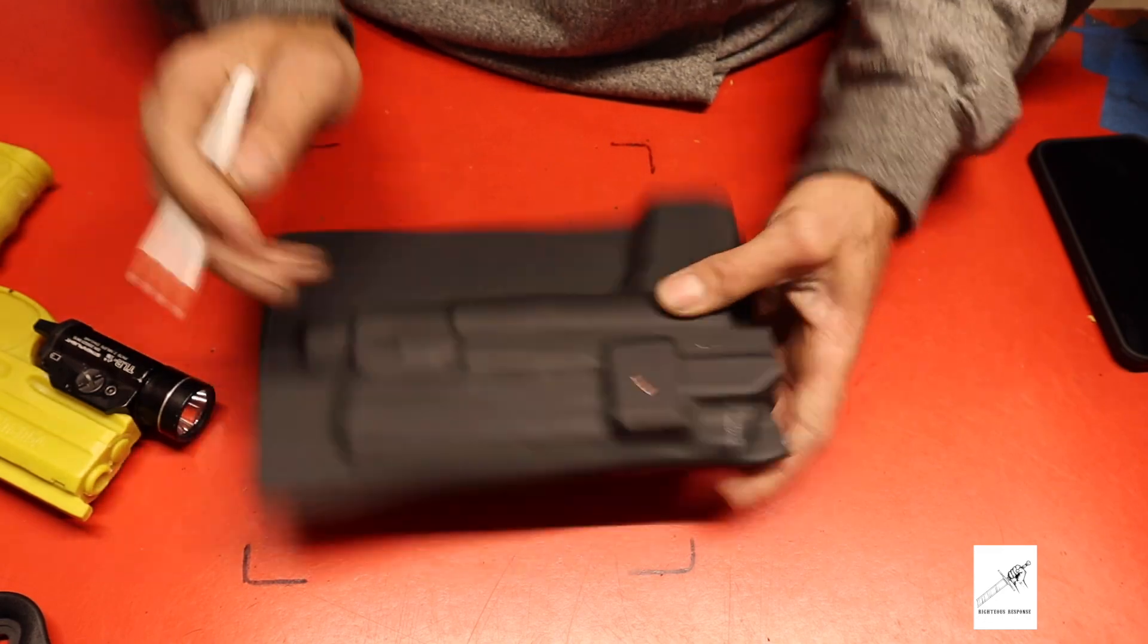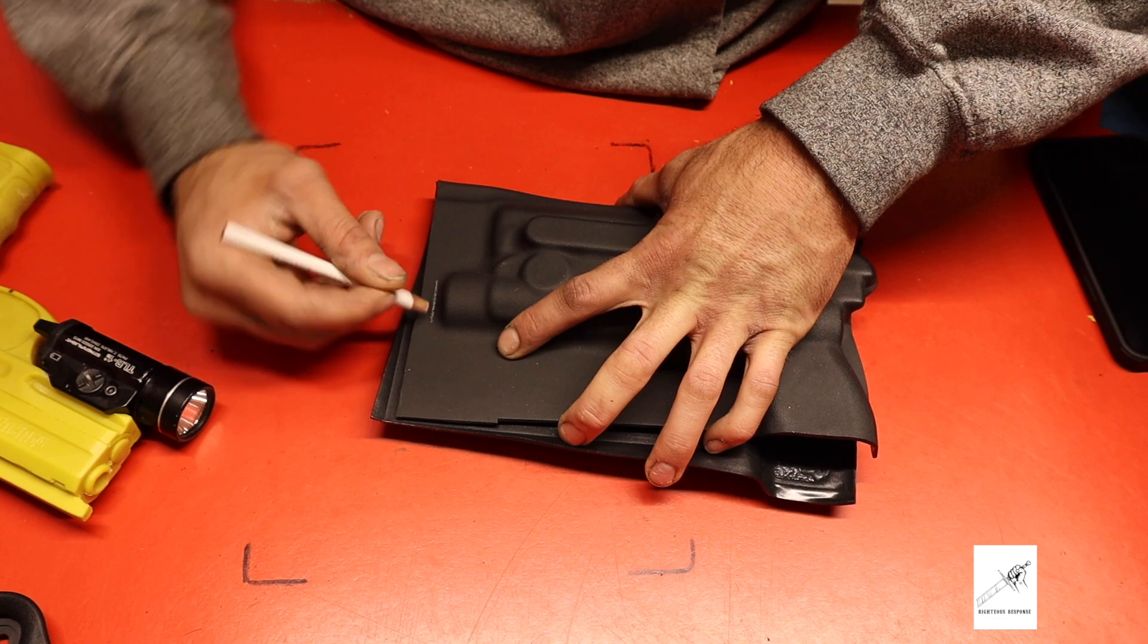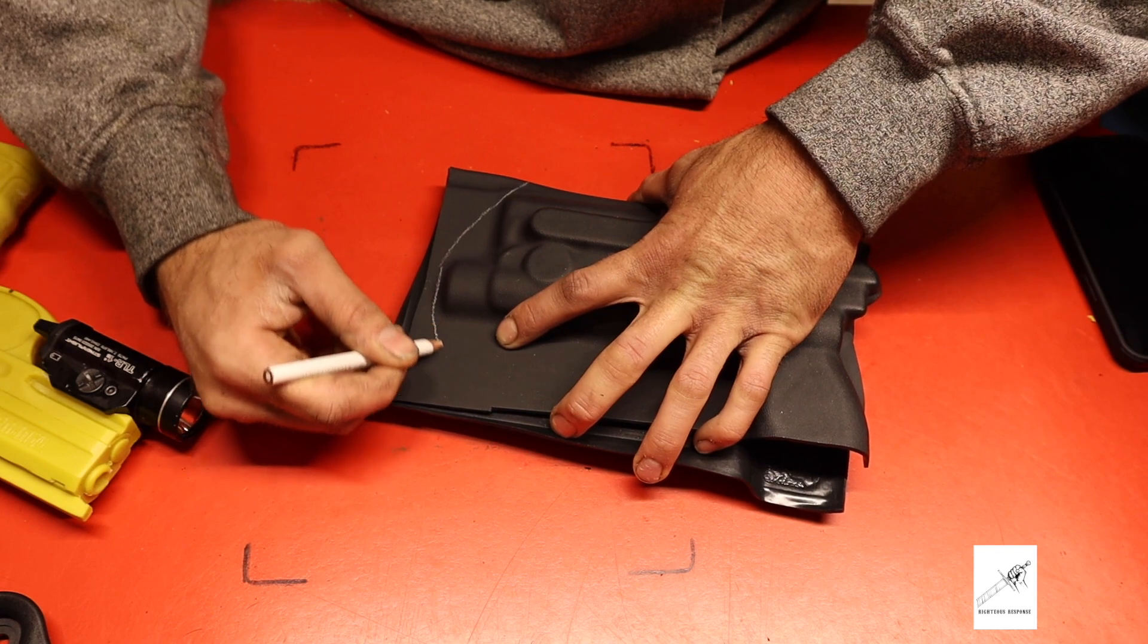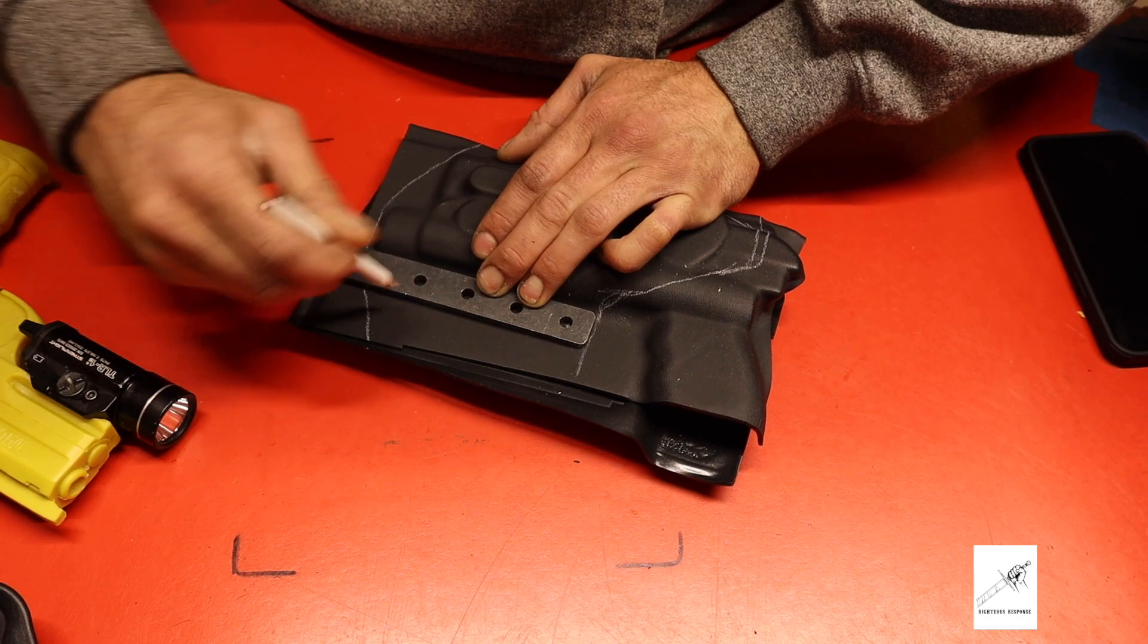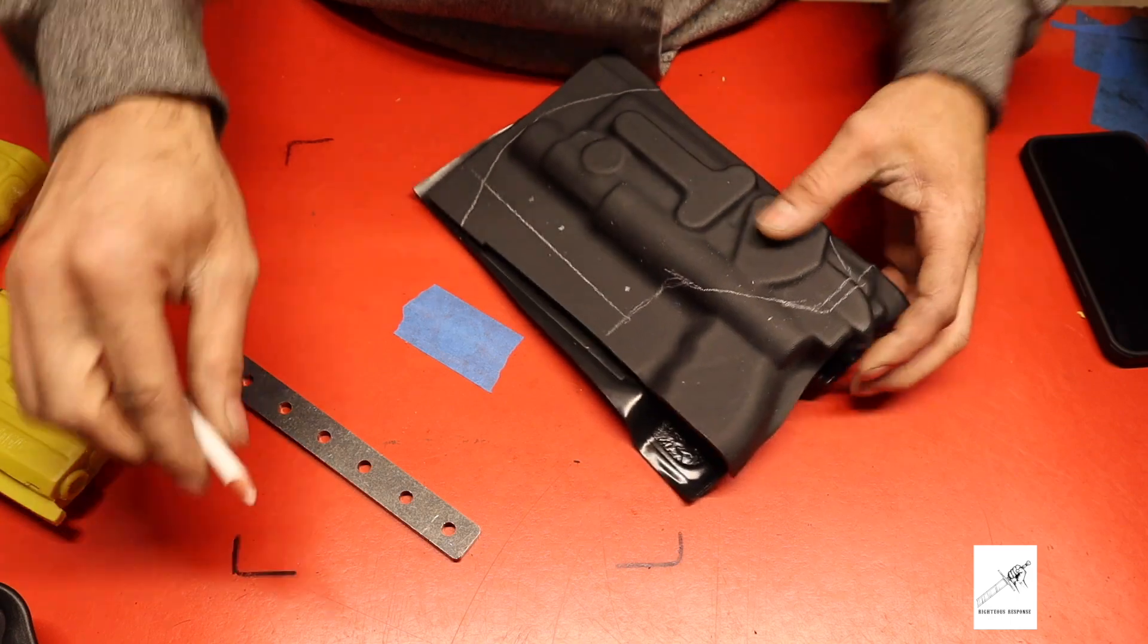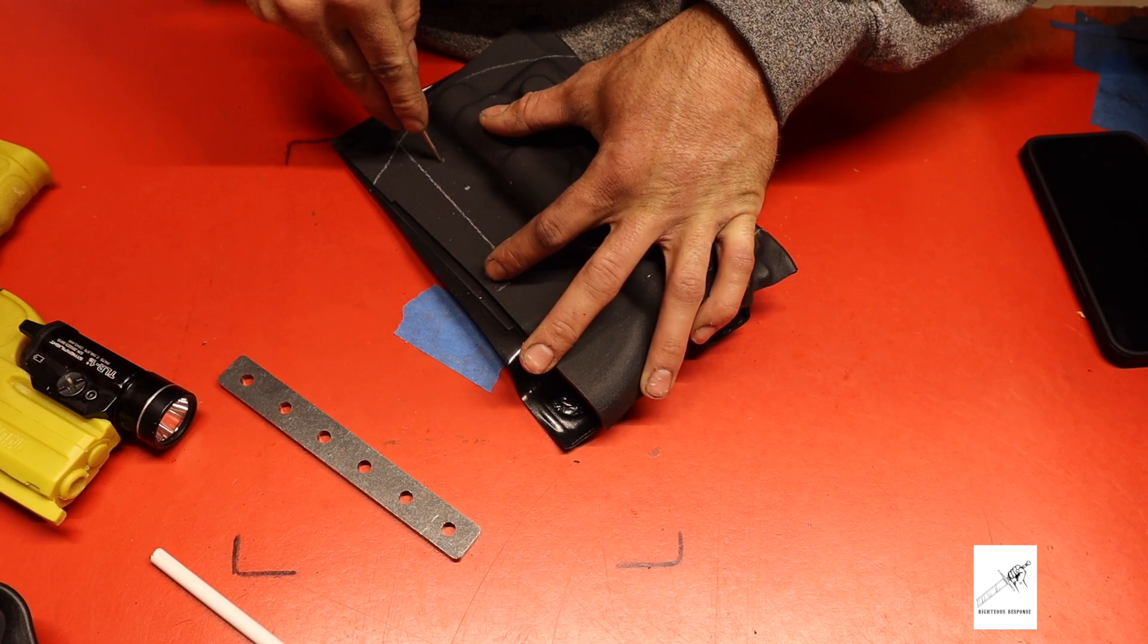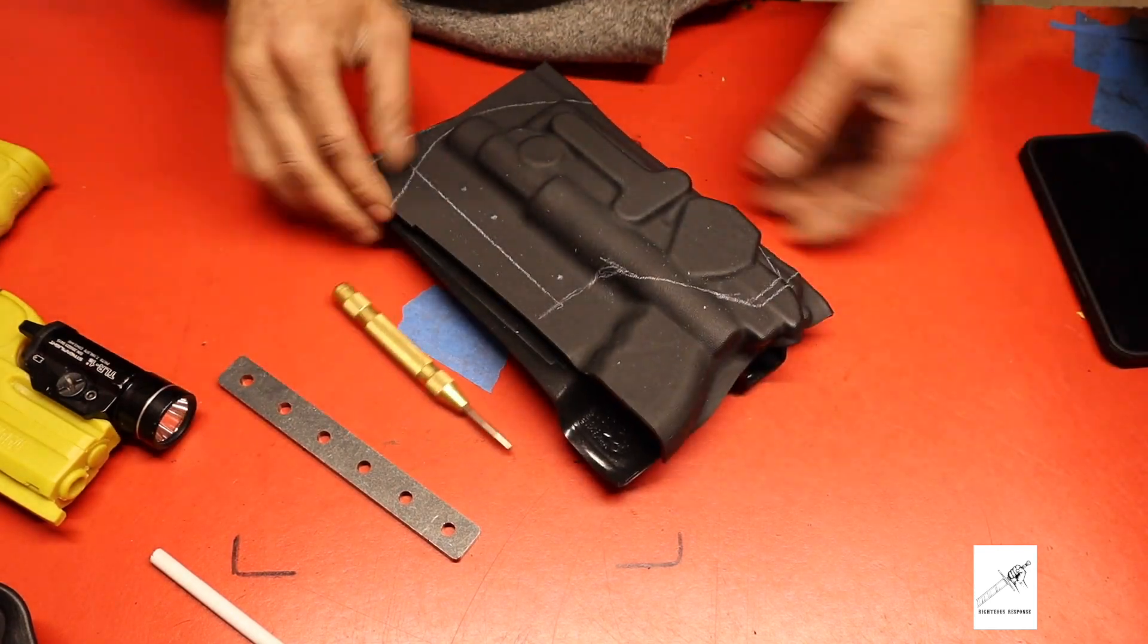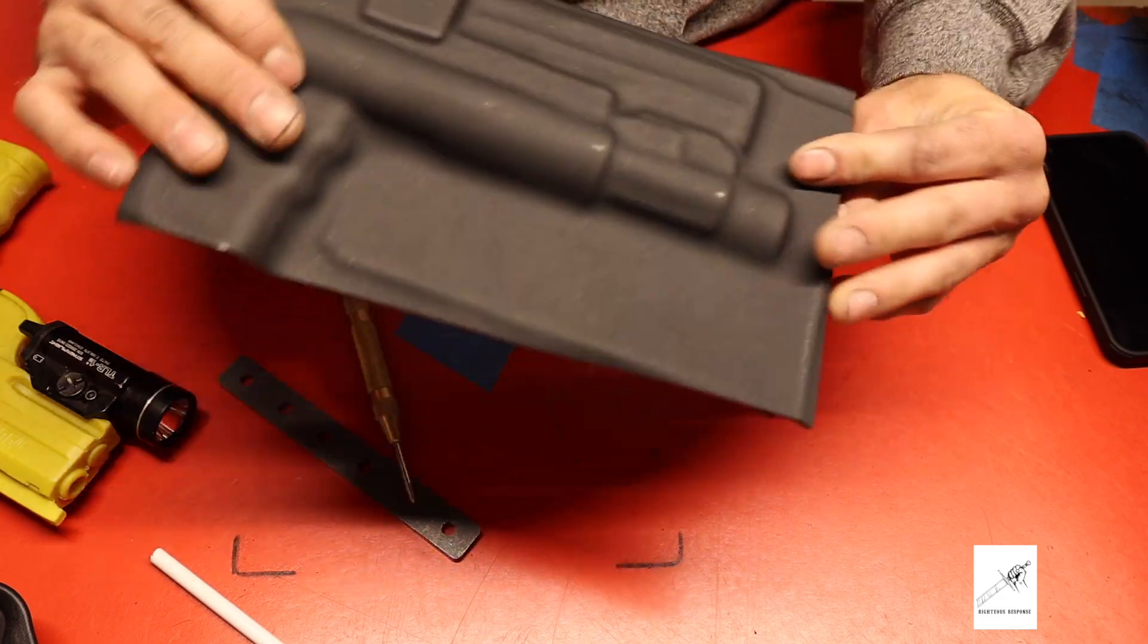We'll go ahead and punch these so we know where to drill in case we wipe that off. So, I take this to the band saw, trim it out, and then we can go from there.